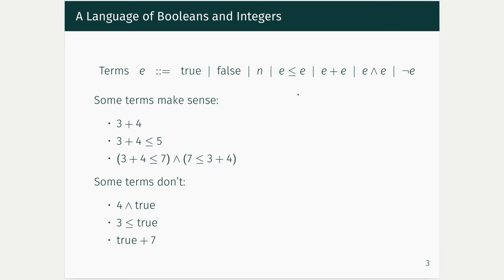Now we're going to recap what you should have learned in semantics last year. We're going to start with a really basic type system — almost the simplest language you can think of. This is going to be a language of booleans and integers. So we have primitives like true and false, and we have some natural numbers and operations on expressions. We're allowed to add two expressions together, compare two numbers to see which one is bigger than another, and we also have some logical operations like taking the conjunction of two booleans or maybe the negation.